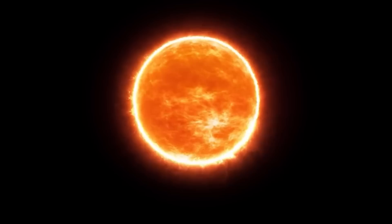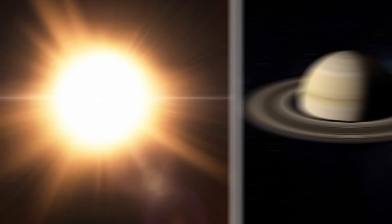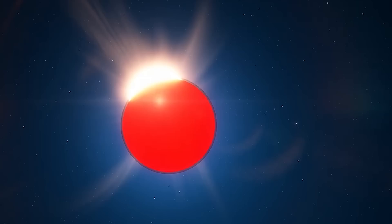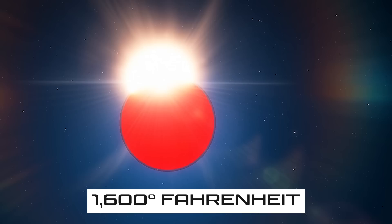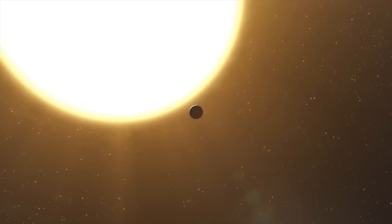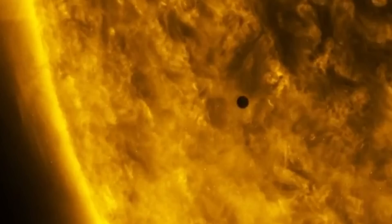The exoplanet WASP-39b is a hot gas giant similar to Saturn. Its maximal puffiness is partly due to its high temperature, around 1600 degrees Fahrenheit or 900 degrees Celsius. WASP-39b orbits pretty closely to its star, at only about one-eighth the distance from the Sun to Mercury, and completes one circuit in a little over four Earth days.